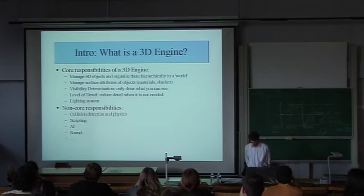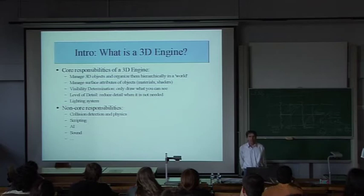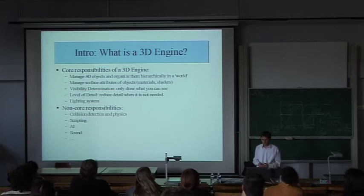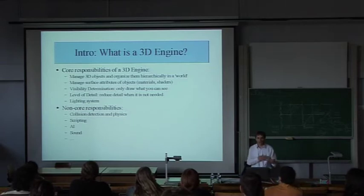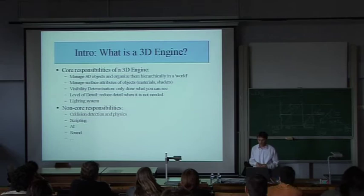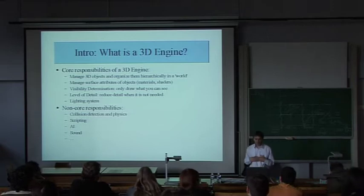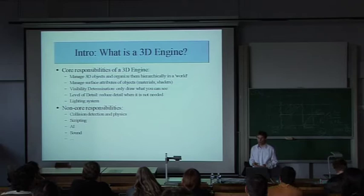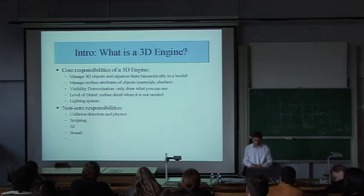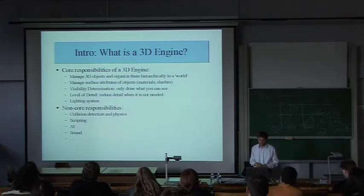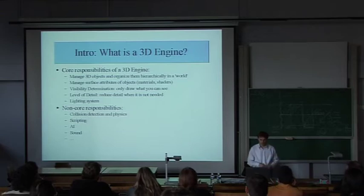So what is a 3D engine? A 3D engine is something that manages and organizes objects in a 3D world. It means making sure that they are represented in an optimal way and that you can easily render them from any kind of viewpoint. An engine also has to manage the surface attributes of all objects — how they look, the material. Is it wood? Is it stone? What kind of attributes does it have? A 3D engine also does visibility determination, which means finding out what you should see and render, and what is invisible at that point in time.